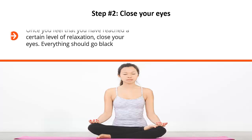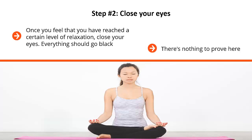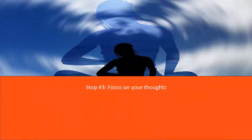Step number two: close your eyes. Once you feel that you have reached a certain level of relaxation, close your eyes — everything should go black. Allow yourself to relax even deeper. Allow yourself to slow your thoughts down. Just focus on the calmness of the darkness. There's nothing to prove here. You don't have to be somebody that you're not. You have nobody to impress. This is just you and your thoughts — just calm, pure darkness. No light, no color, nothing to get worked up about.